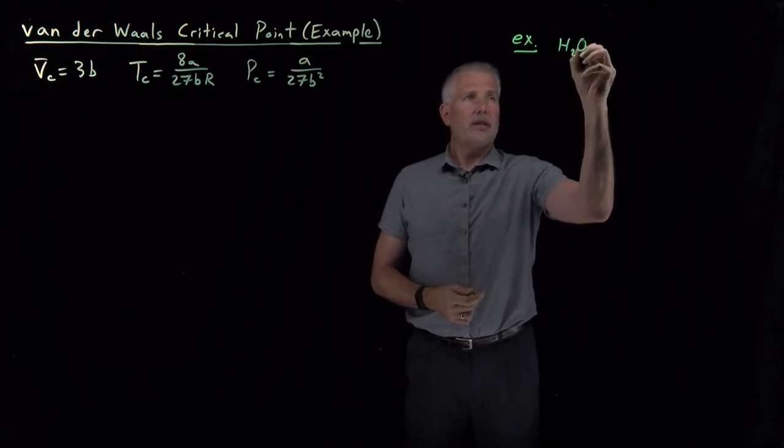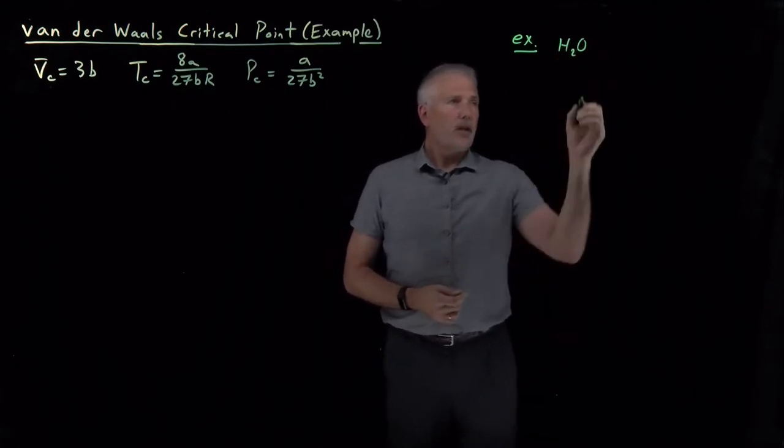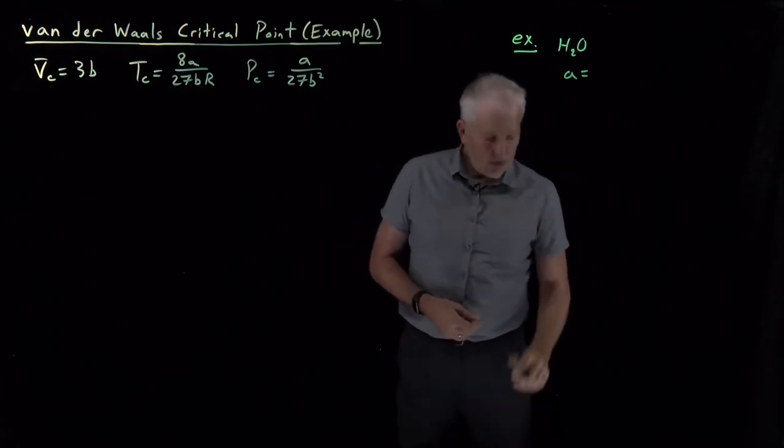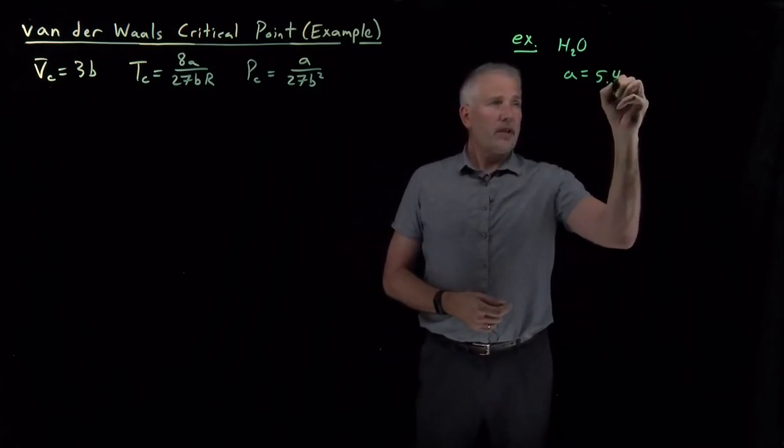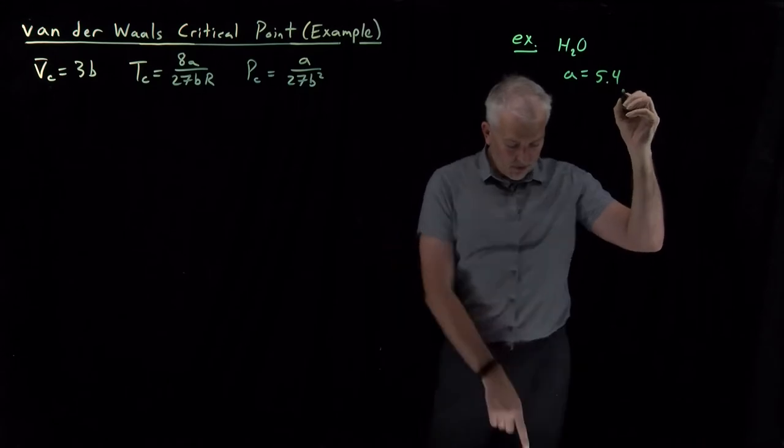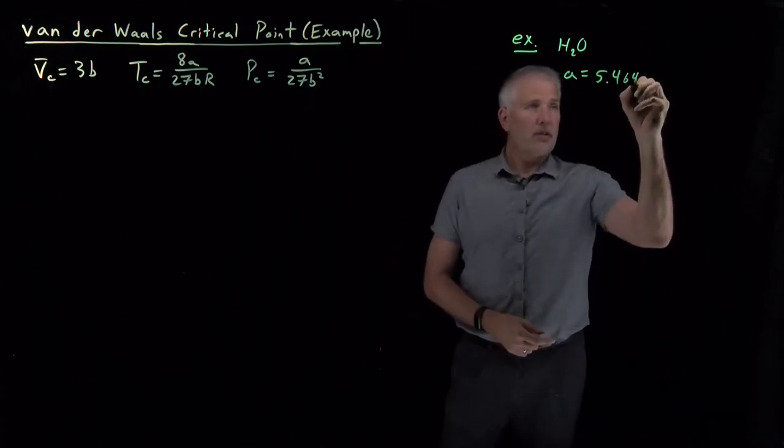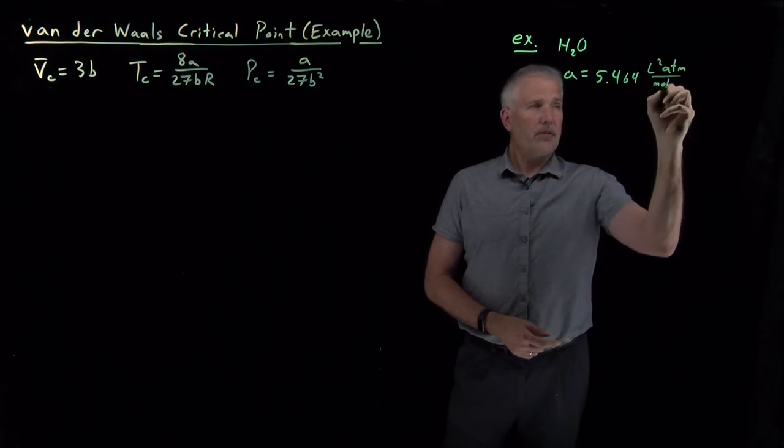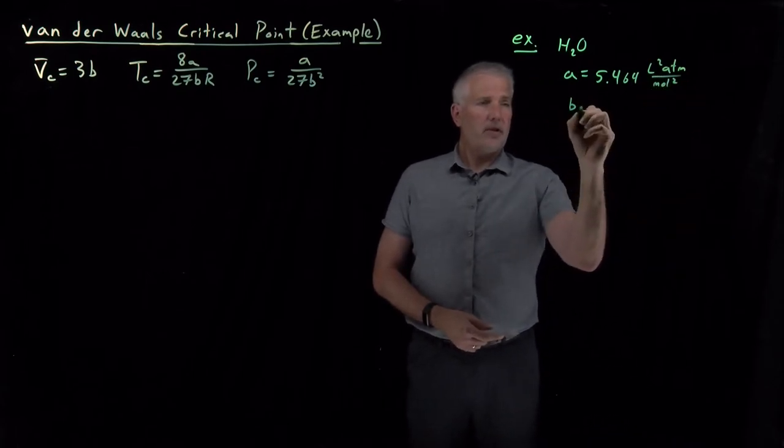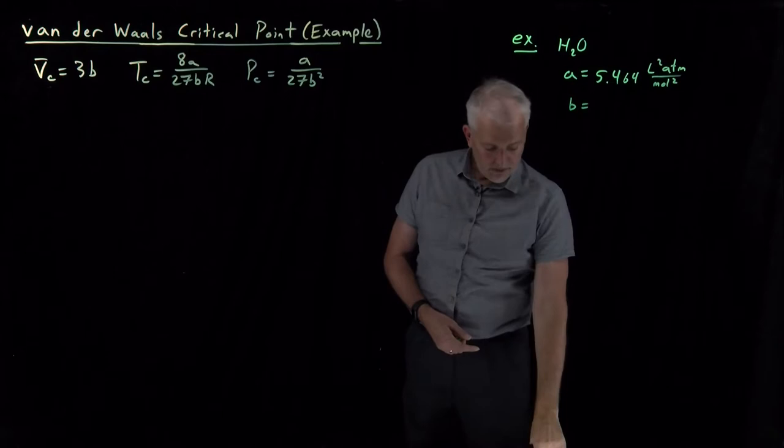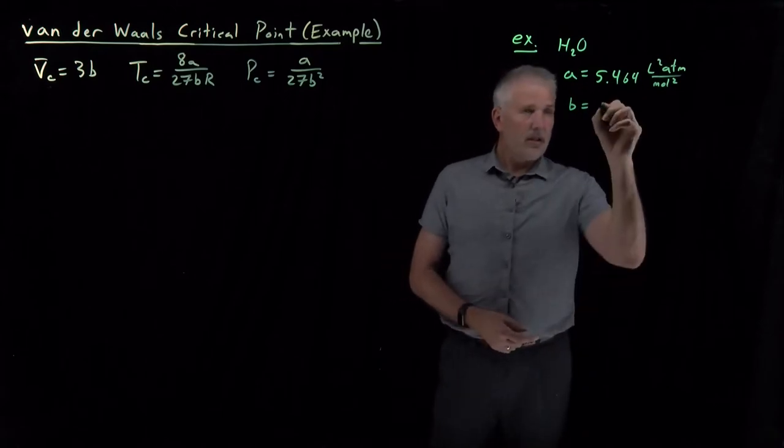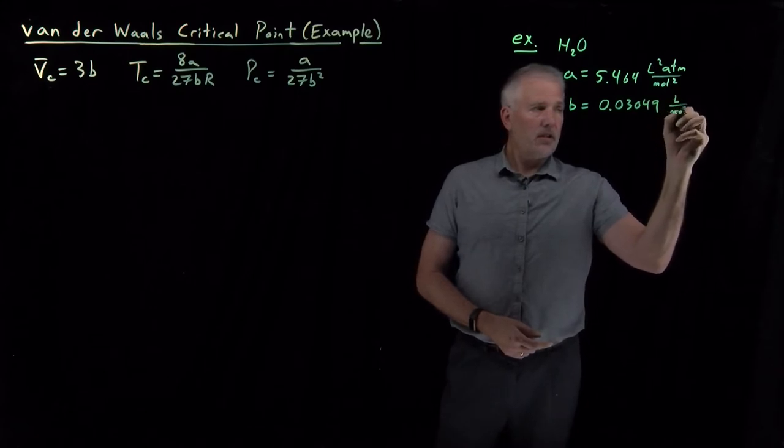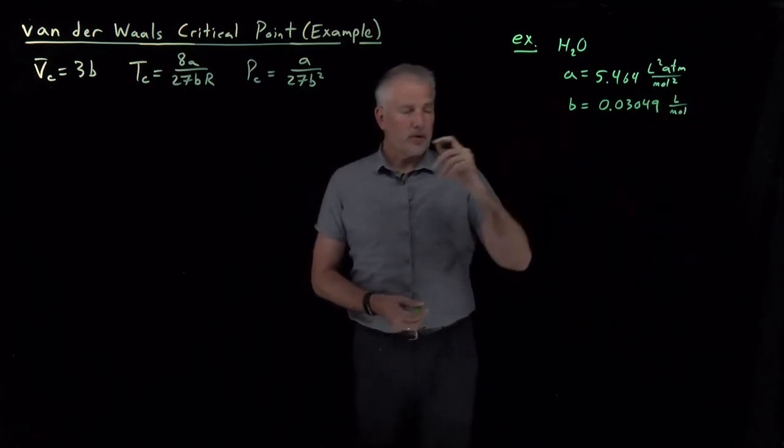Let's talk about water, for whom I can give you the van der Waals coefficients. The van der Waals constant A is equal to 5.464 liters squared atmosphere per mole squared, and the molecular volume given by the van der Waals equation is 0.03049 liters per mole of water. Those are the van der Waals coefficients.